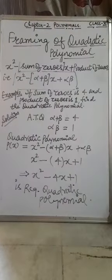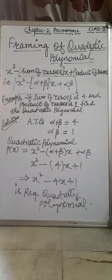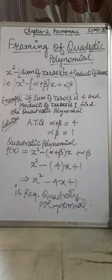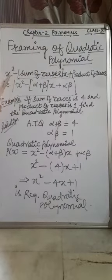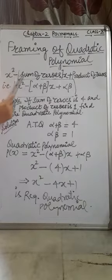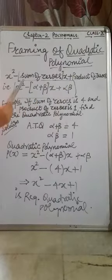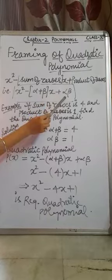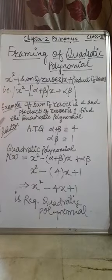Hello students, welcome once again. As you know, we are doing chapter 2 polynomials of class 10. So far we have covered degree of polynomials, zeros of polynomials, geometrical representation of zeros of polynomial, and relationship between the zeros and its coefficient. Today we are going to learn framing of a quadratic polynomial. The formula is: x squared minus (sum of zeros) times x plus (product of zeros), that is x squared minus (alpha plus beta)x plus alpha into beta.